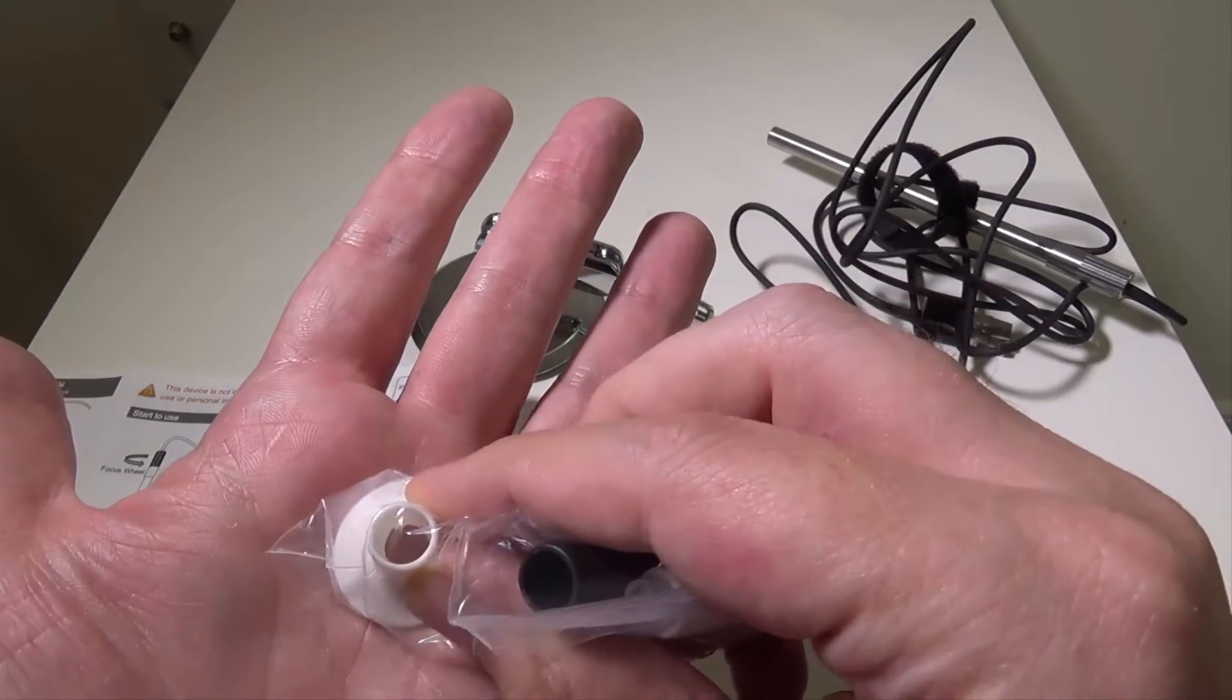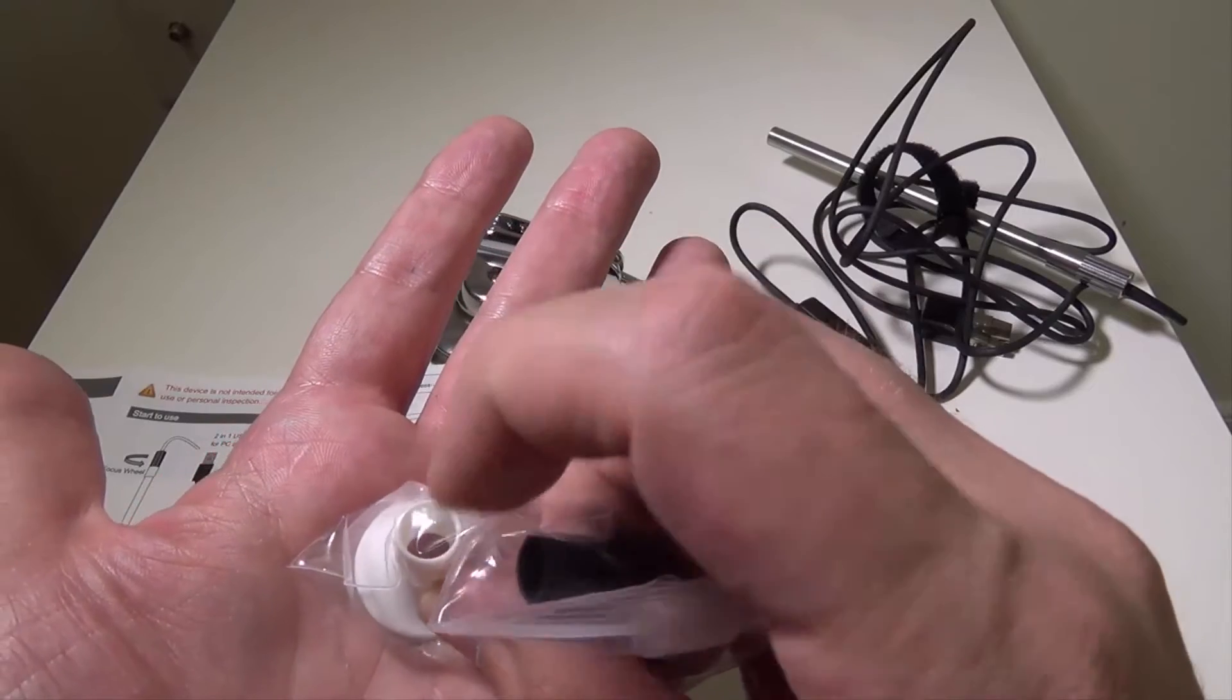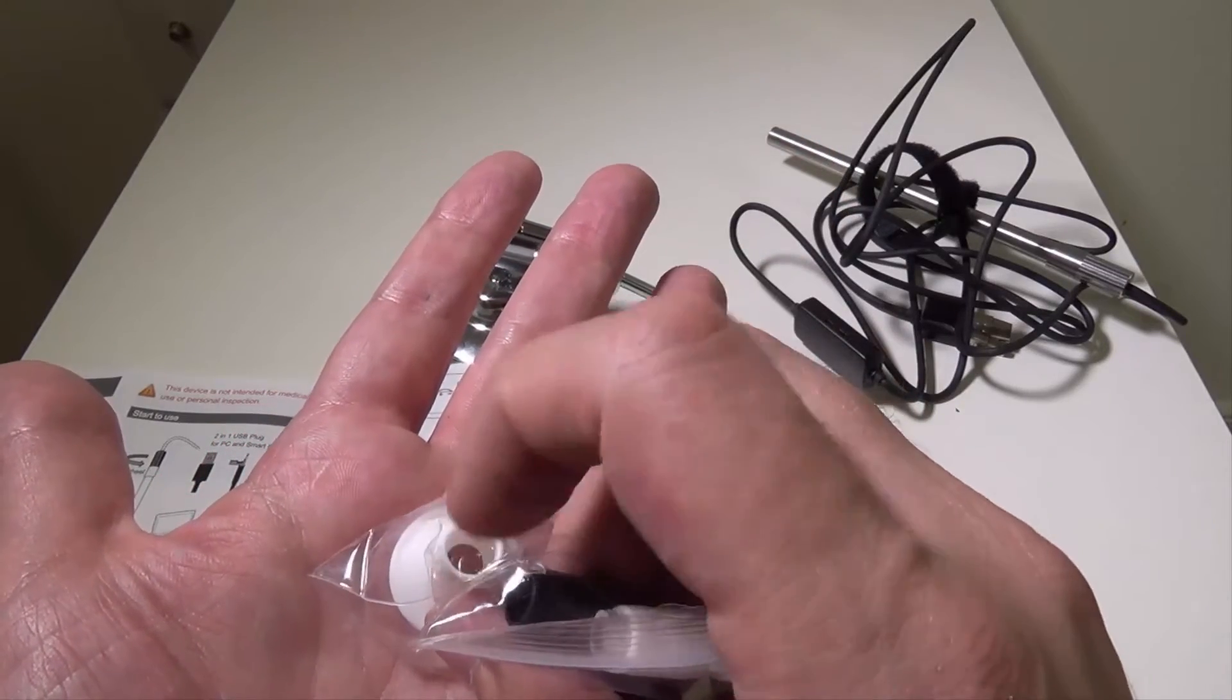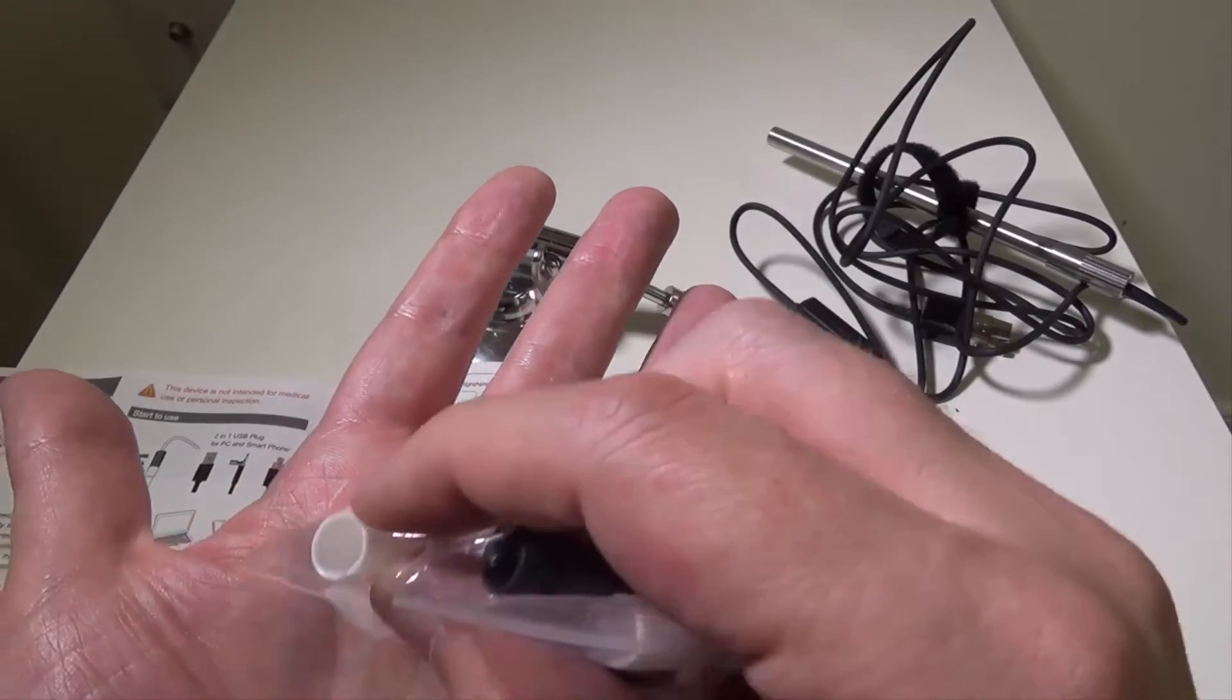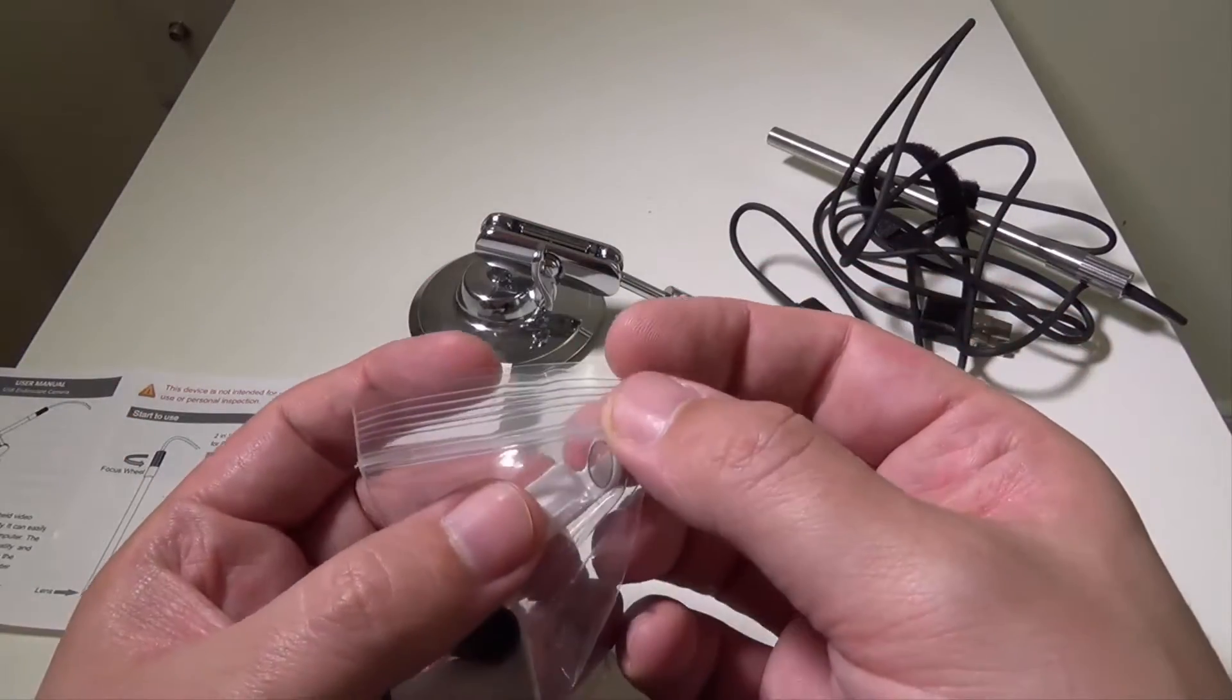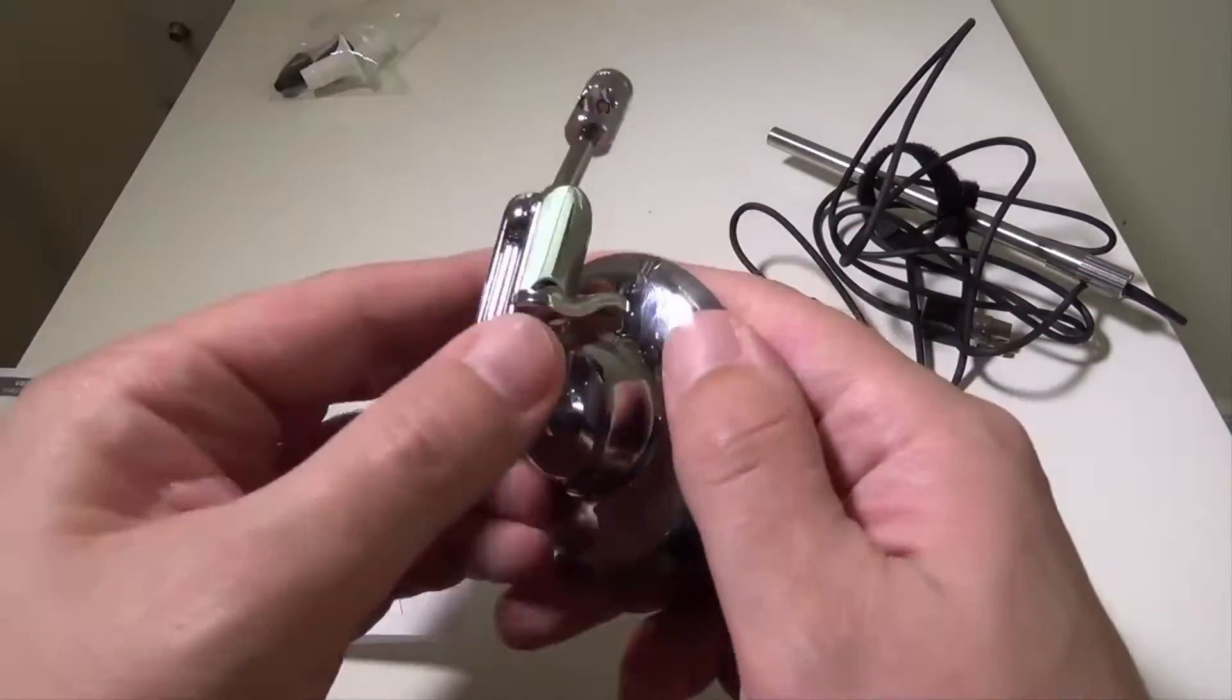You'll put that area over, say I wanted to take a picture of my palm or something like that. All the LEDs on the end of the endoscope will actually focus right onto that spot. They give you a right angle mirror as well.